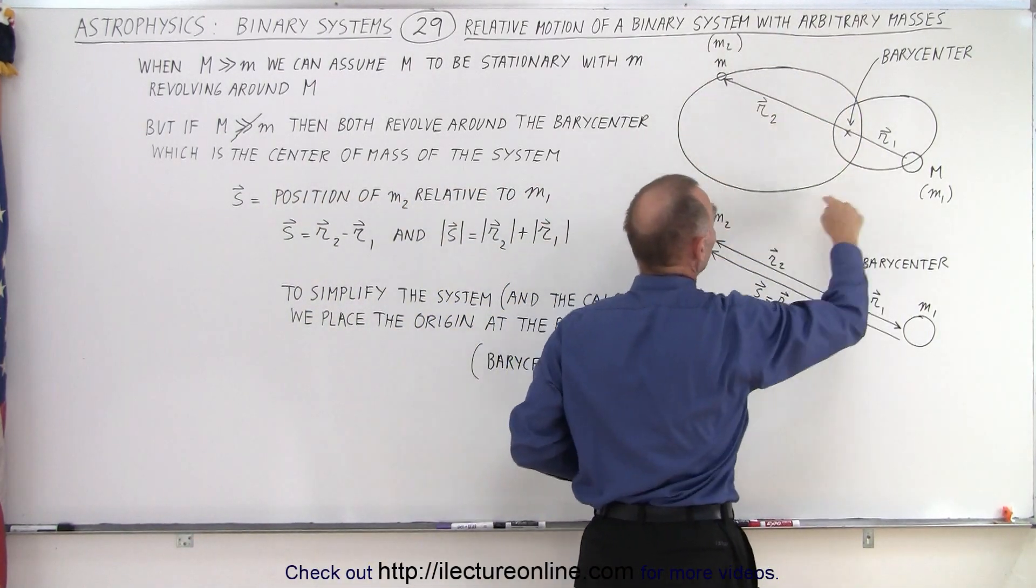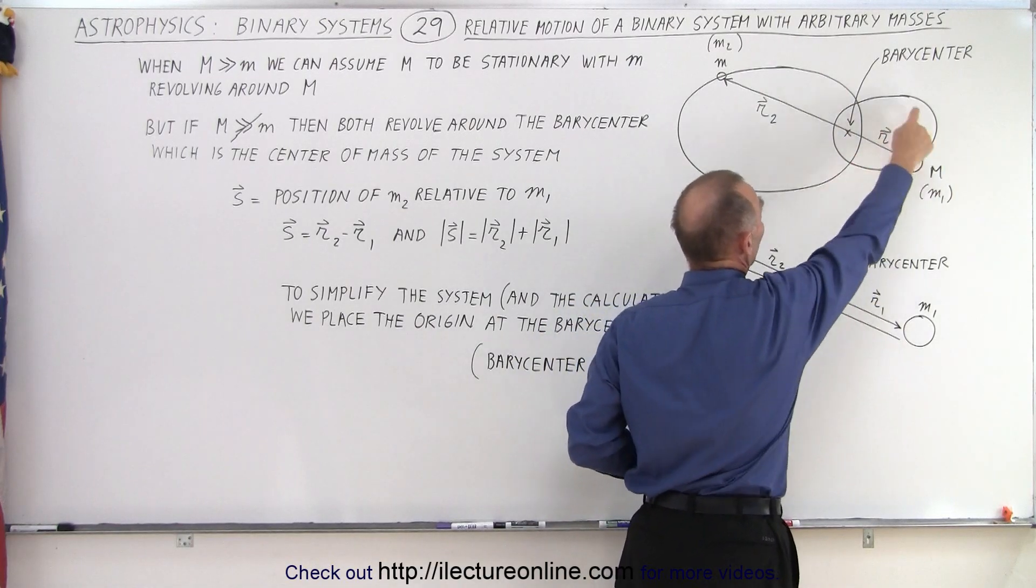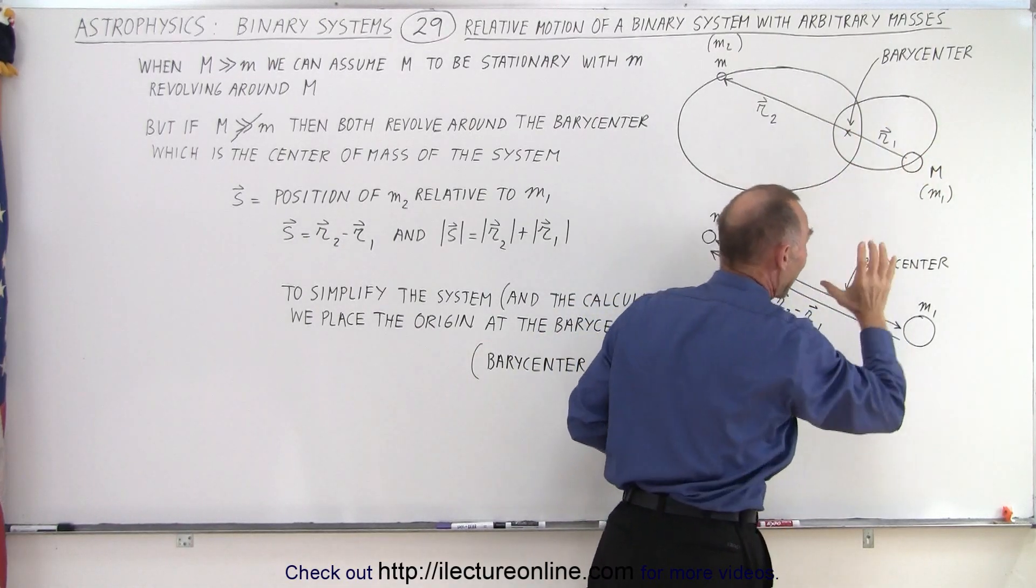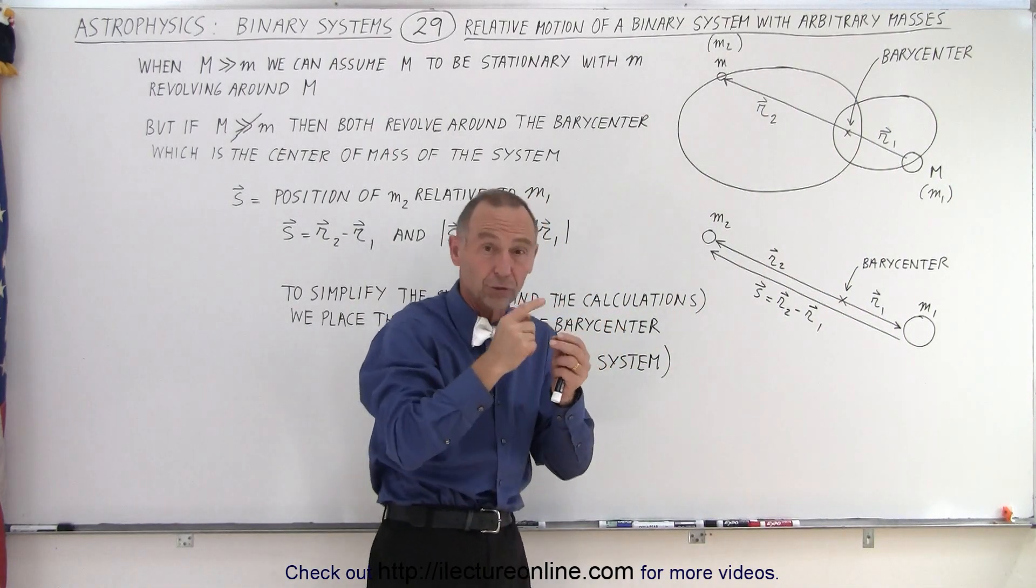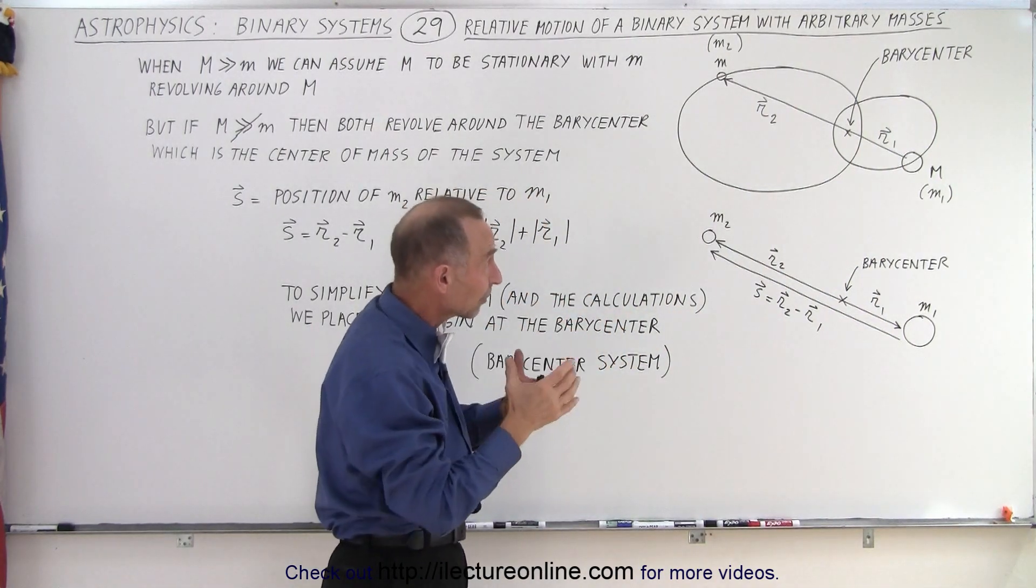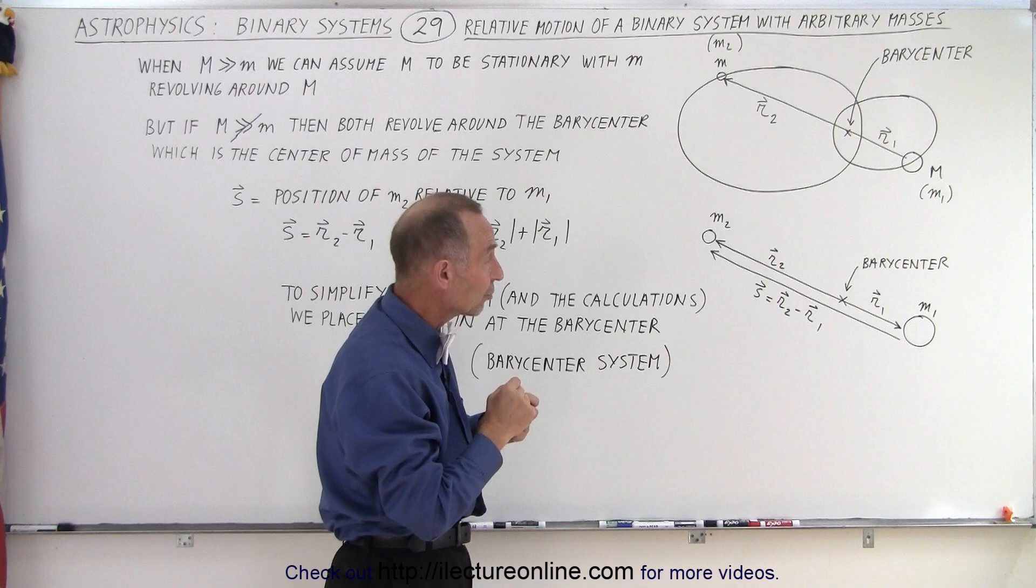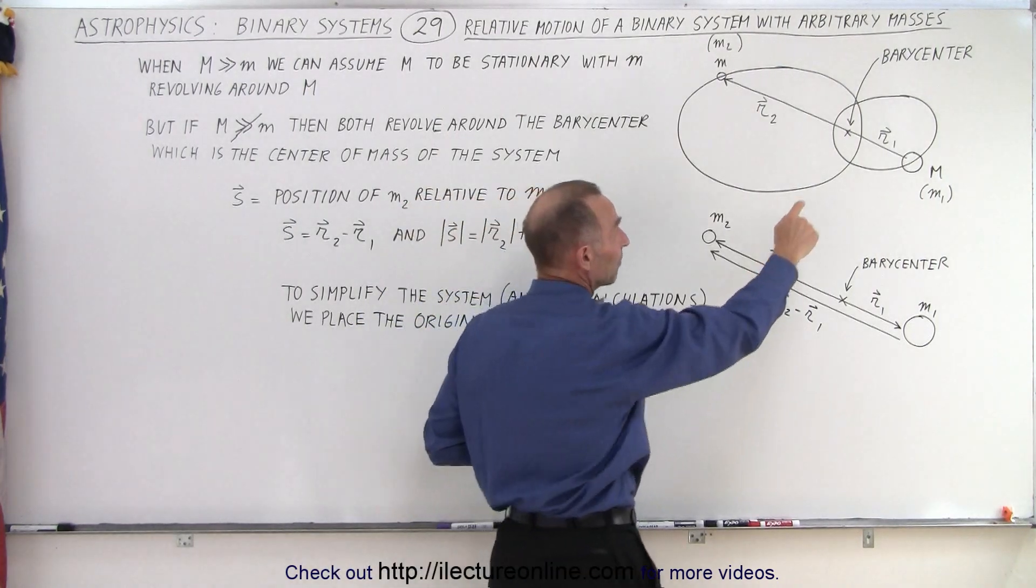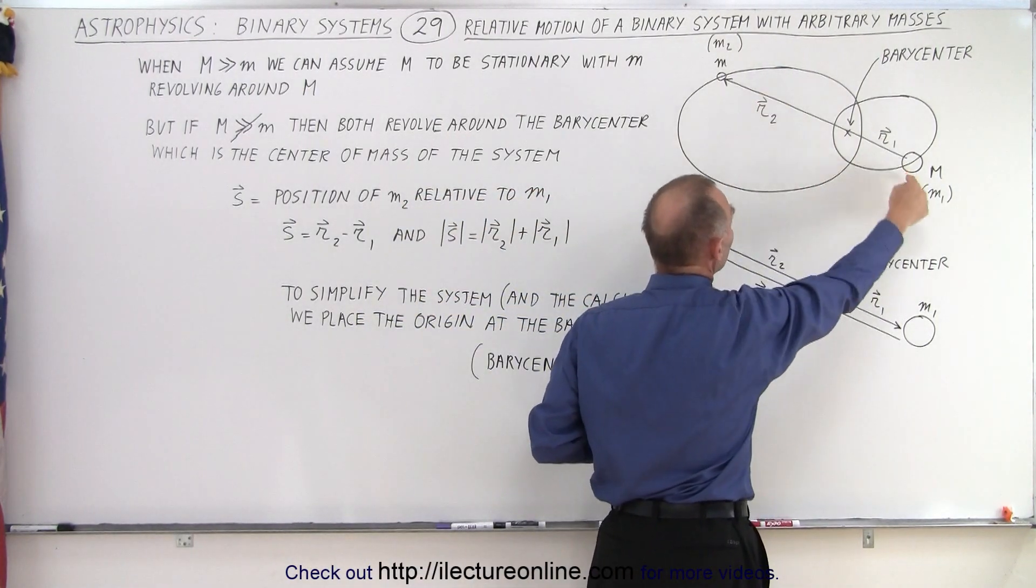And so the small planet goes around the barycenter, but so does the large object, the star. So the star actually also makes small little circles or small little ovals. Typically it's also elliptical in nature, in such a way that there's a center mass here where both objects revolve around.